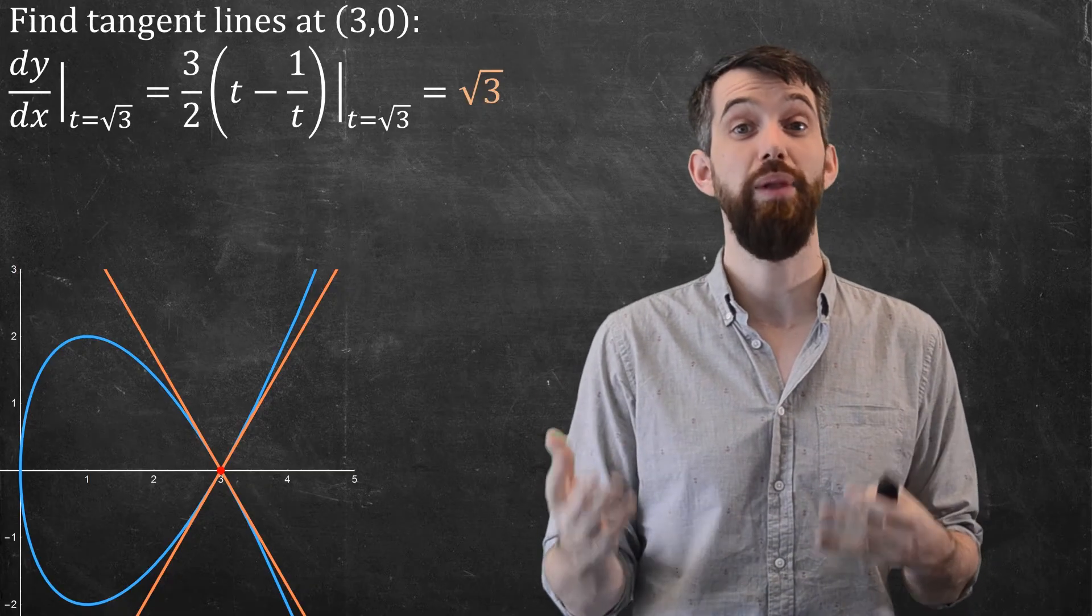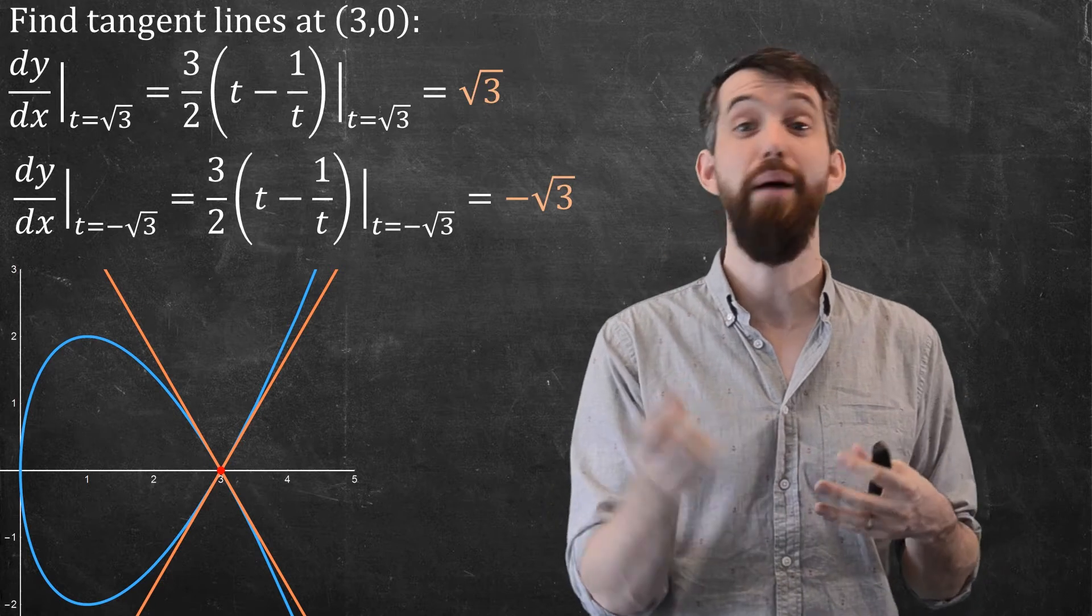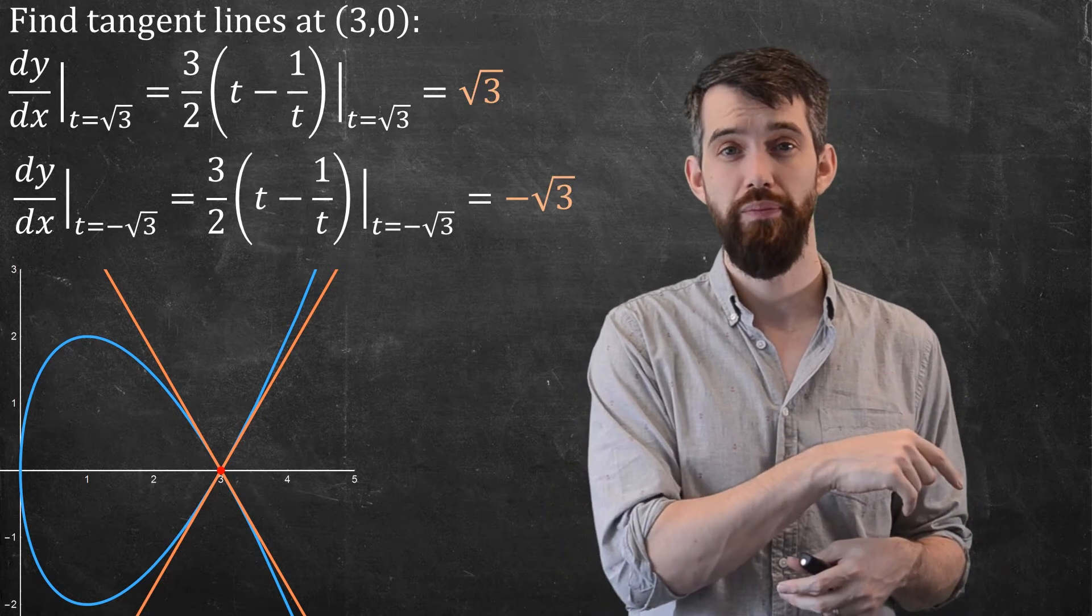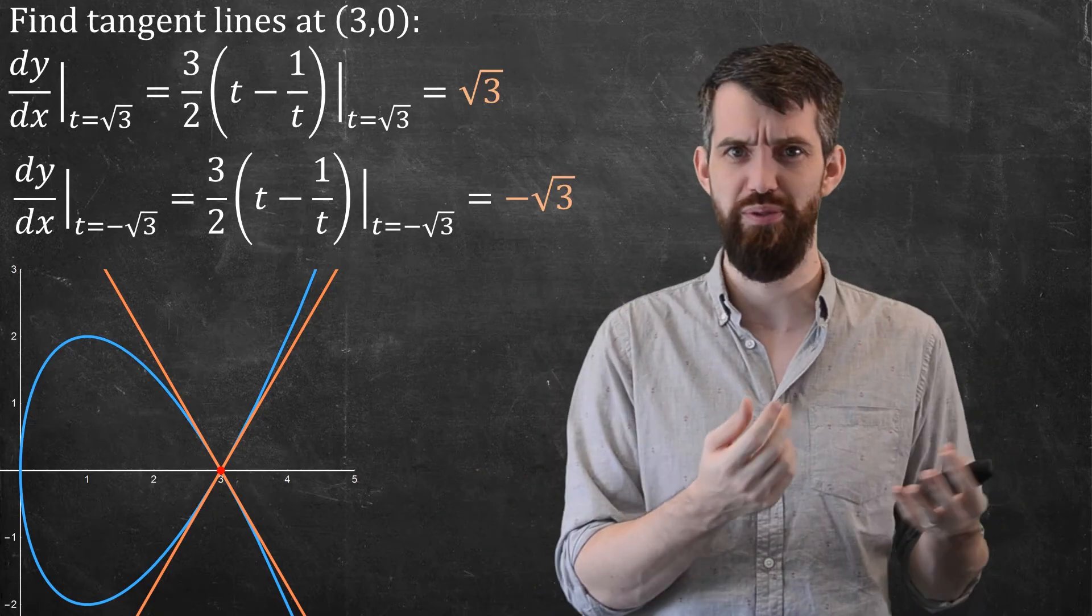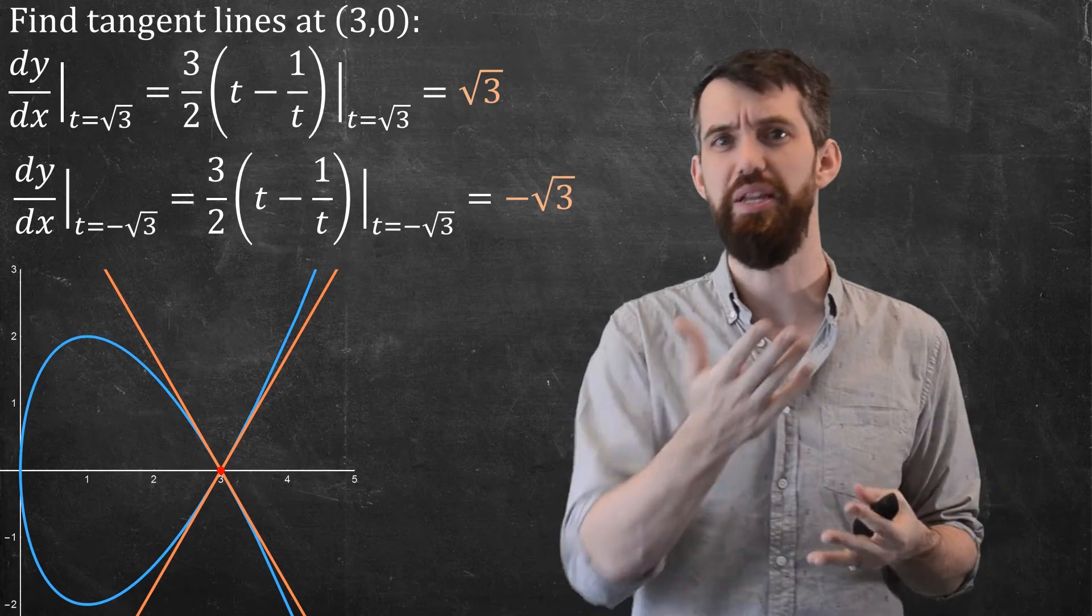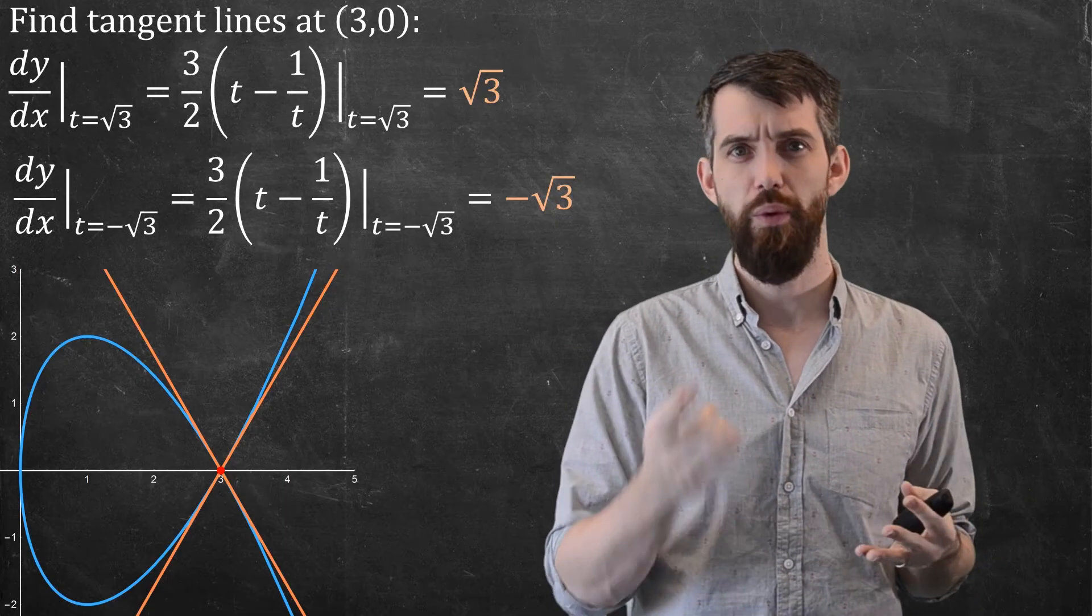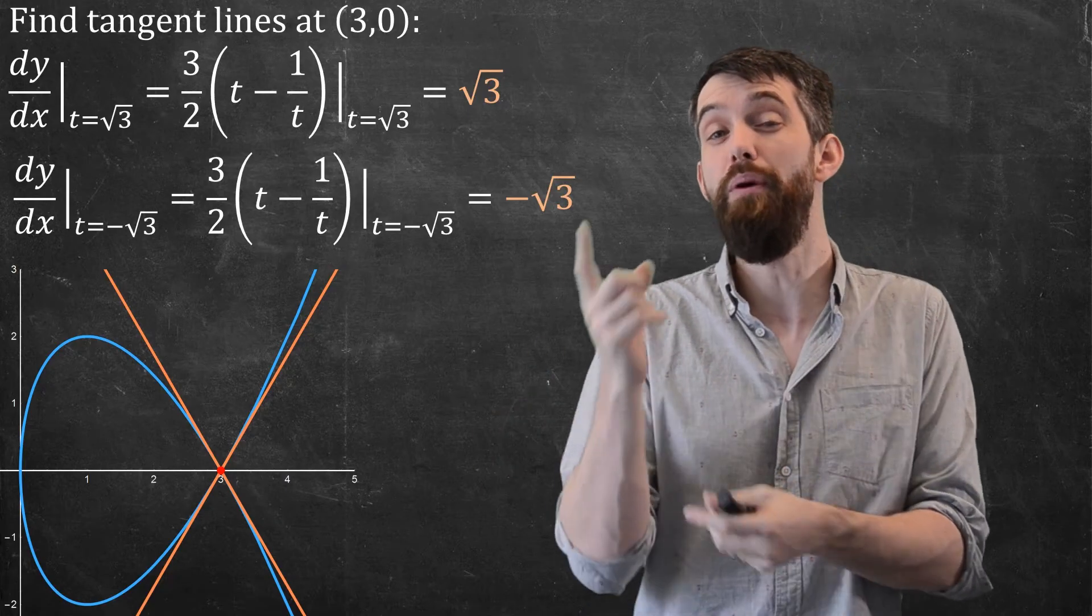Alright, same story for plugging in t = -√3, you can plug that in and you get -√3 as well. By the way, it's just a complete coincidence that when you have t = √3, the output is √3. When you plug t = -√3, the output is -√3. That's just a coincidence of this particular problem. Regardless, what I'm now going to do is try to figure out, well, I have this slope, but what about the equations?